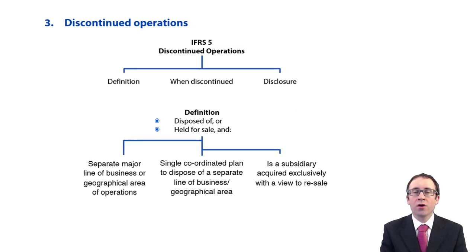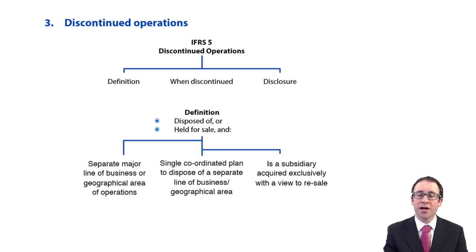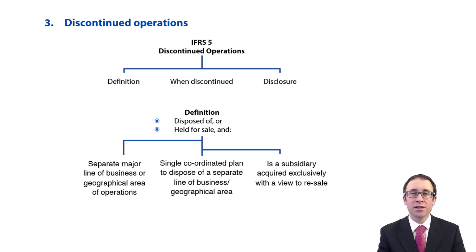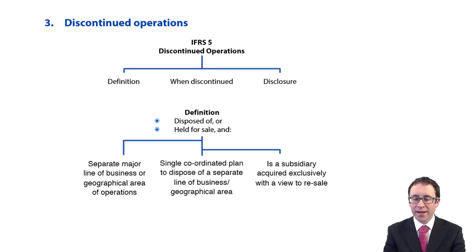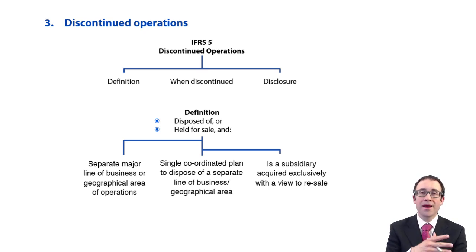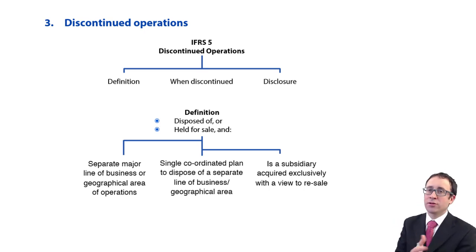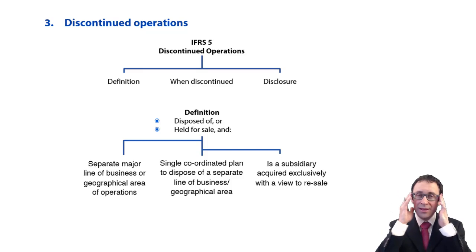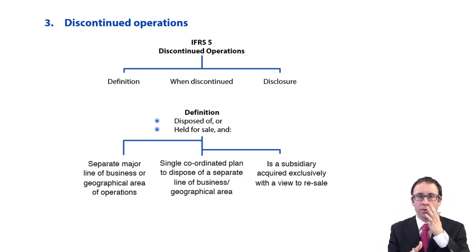Having looked at our non-current assets held for sale, let's now go through and have a look at the discontinued operation side of IFRS 5. When it comes to discontinued operations there are three things we need to consider before we get into any examples: what is the definition of a discontinued operation, when do we make the disclosures, and then what are the disclosures that we make. Remember it's just a disclosure standard, but disclosure with regards to a little bit more of the computational side.